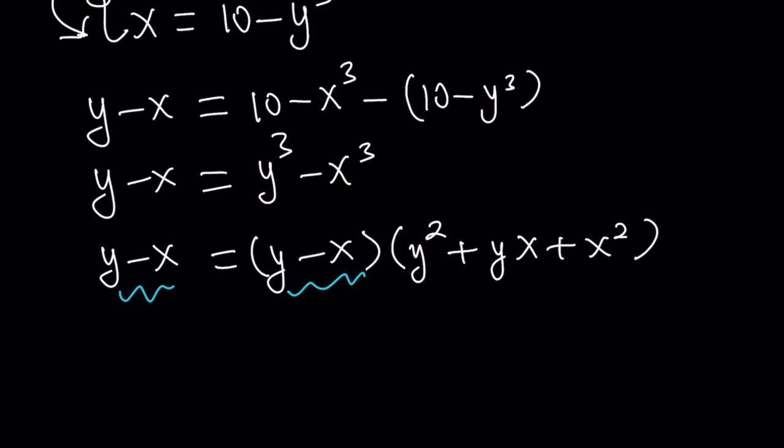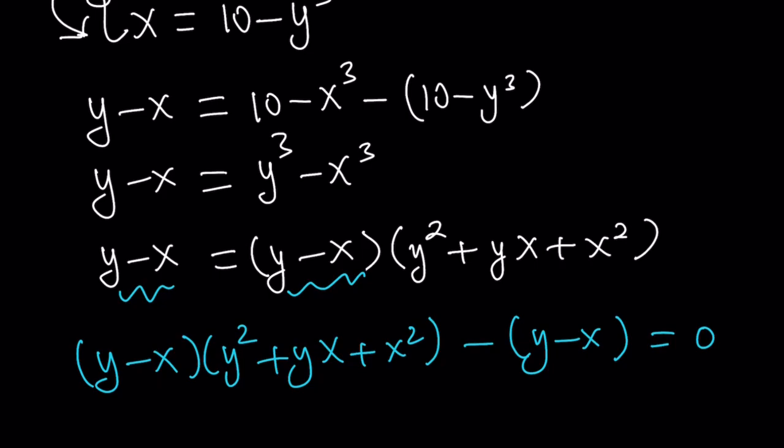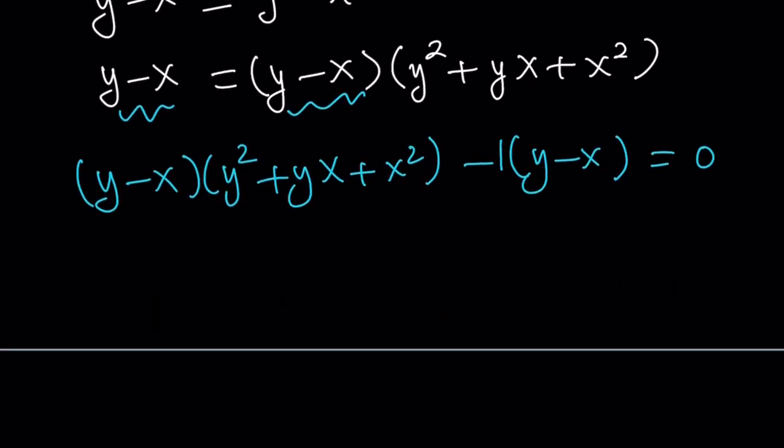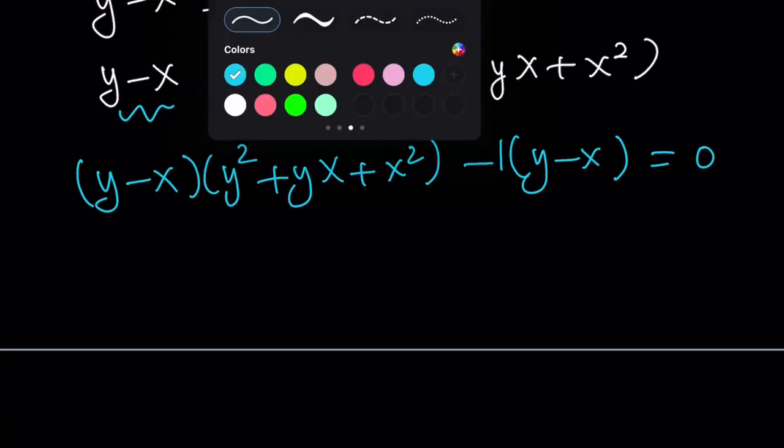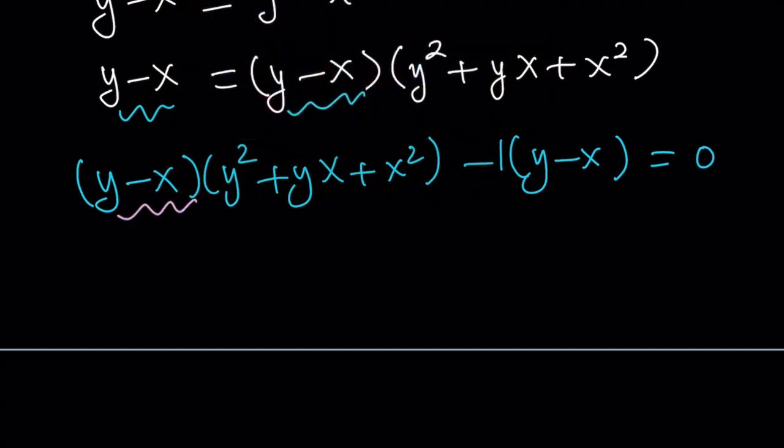Let's put everything on the same side. Y minus x times y squared plus yx plus x squared minus y minus x equals 0. And then you can just go ahead and put a little 1 here so that there's a common factor. And it is going to be y minus x. Let's take out y minus x. We get y squared plus yx plus x squared minus 1 equals 0.